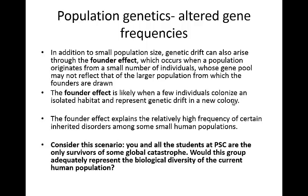Let's say something happens, and you and just the students at Prairie State are the only survivors of some global catastrophe. Do you think that this group would adequately represent the biological diversity of the current human population — the entire Earth's population? Or, let's say you and whoever got selected are going to go to Mars to establish a colony there. What would you need to do to make sure that population would adequately represent the biological diversity of humans?